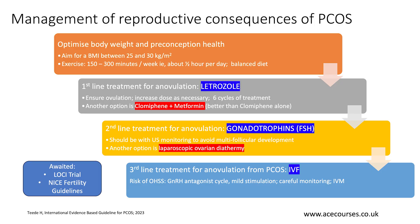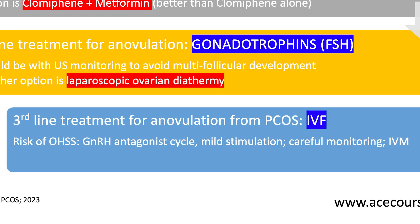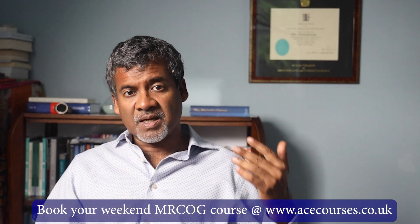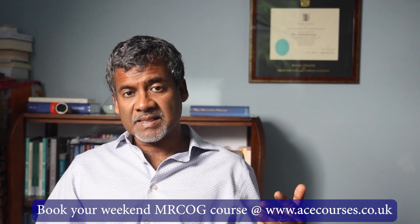The third line treatment for anovulation related to polycystic ovary syndrome is, unsurprisingly, IVF. IVF is very effective but carries risks — the main one in PCOS patients is the potentially serious condition called OHSS, ovarian hyperstimulation syndrome. To mitigate this, a GnRH antagonist cycle could be used, mild stimulation with stepping up of FSH dose is preferable, and very careful monitoring is needed to avoid excessive ovarian stimulation.